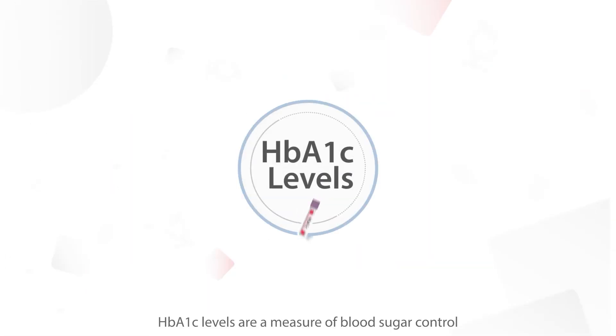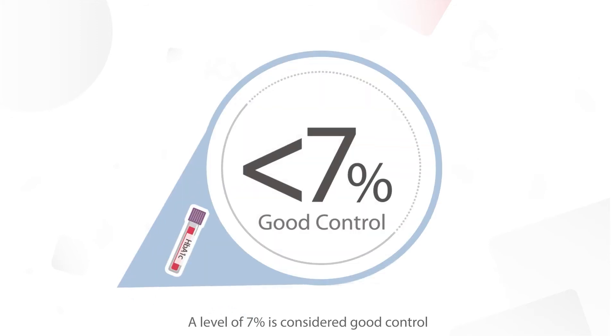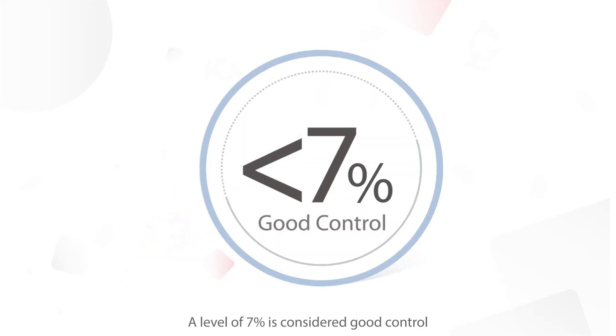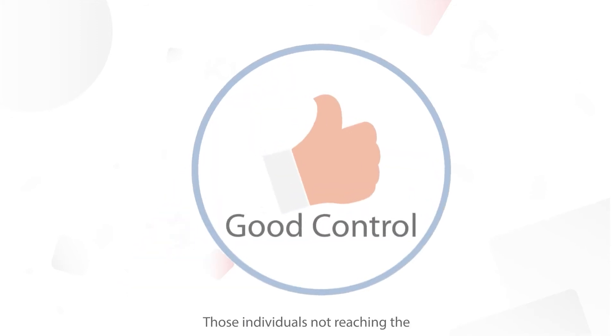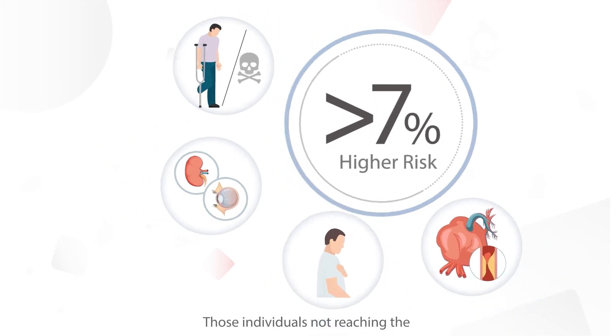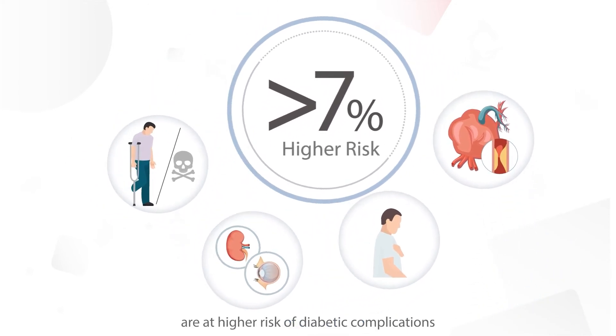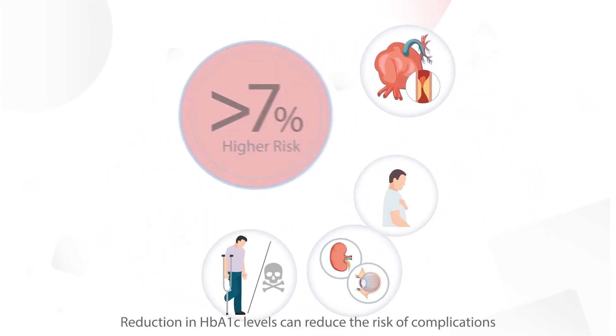HbA1c levels are a measure of blood sugar control. A level of 7% is considered good control. Those individuals not reaching the less than 7% target are at higher risk of diabetic complications.